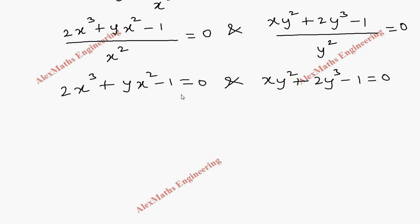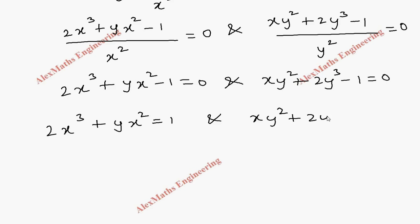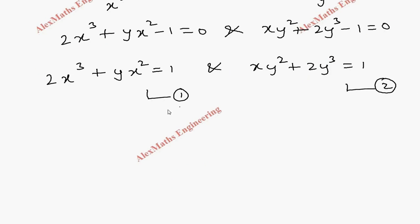Taking 1 to the other side: 2x³ + yx² = 1 and xy² + 2y³ = 1. We got two equations — let's call them first and second. Since both right-hand sides are equal to 1, we equate the left-hand sides: 2x³ + yx² = xy² + 2y³.